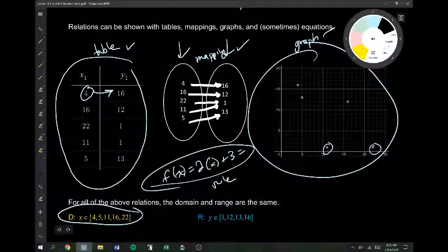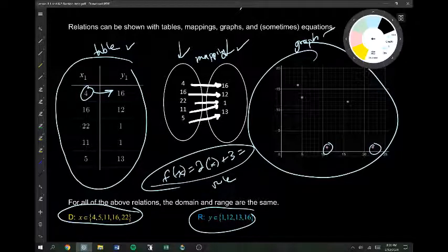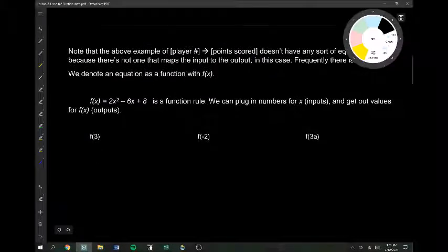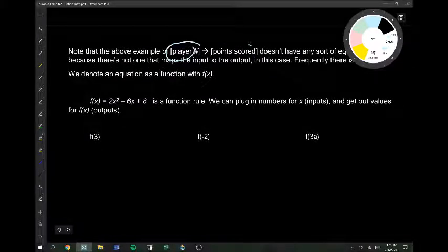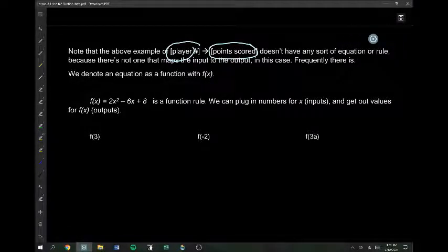And again, you'll note, for all of these functions, because it's all one function, for this function shown in all these different ways, the domain and range is the same. In the above example, the player number got mapped to the points scored. And that doesn't have any sort of equation or rule, because there's no way to map inputs to outputs like that. Frequently, there is an equation, or a rule, as we call it.